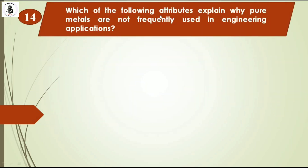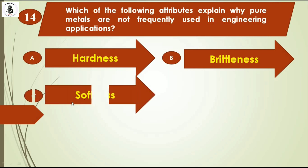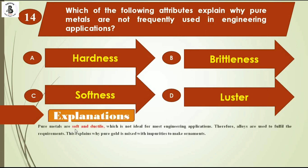Which of the following attributes explains why pure metals are not frequently used in engineering applications? Option A hardness, option B brittleness, option C softness, option D luster. Pure metals are soft and ductile, which is not ideal for most engineering applications. Therefore, alloys are used to fulfill engineering requirements. Due to softness, pure metals are not preferable. So the right answer is option C, softness.